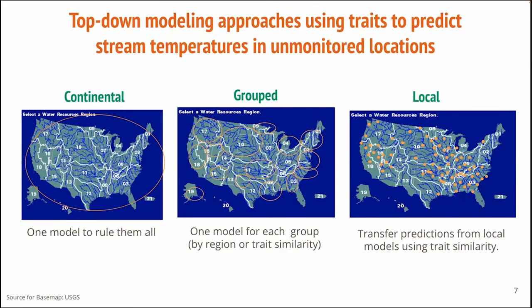This example is focused on predicting stream temperatures across the continental United States. Stream temperature is an important water quality parameter that can be affected by global warming as well as heatwaves and drought. Our goal is to predict stream temperatures in unmonitored locations using data for monitored sites. We built and compared machine learning models that utilize data at multiple spatial scales. In the first approach — the continental model — we implemented a single machine learning model with trait information for all monitored sites. In the second approach, we grouped sites either regionally or by trait similarity, and built a machine learning model for each group.